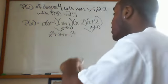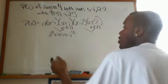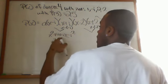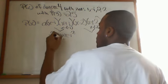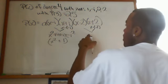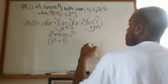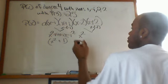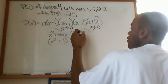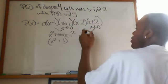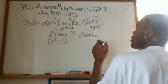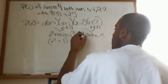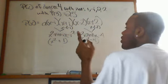Since i squared equals negative one, and a negative of a negative is a positive, we get x squared plus 1. For the other pair, (x minus 2)(x plus 2): we get x squared, plus 2x minus 2x — which cancels — minus 4. So that gives us x squared minus 4.